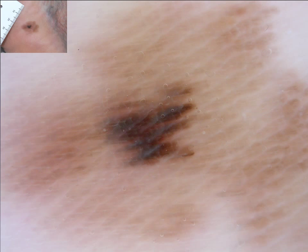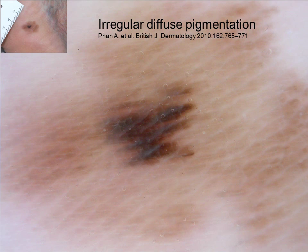If you are not sure where the furrows are, sometimes air bubbles can help you, because air bubbles are most frequently situated in the furrows. Another important parameter visible in this lesion is the so-called diffuse pigmentation, which was described by the group of Luctoma in 2010 as an important parameter for an acral melanoma.